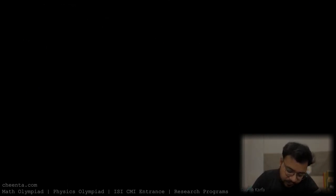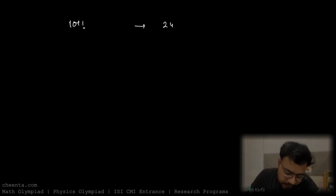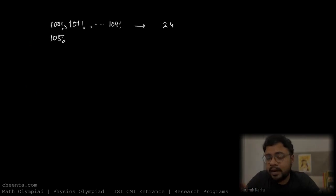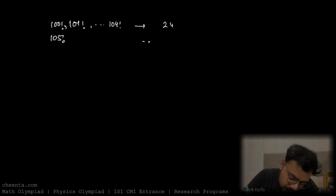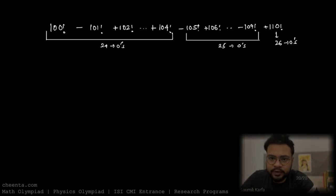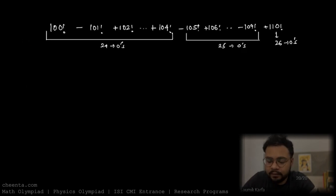Using the same idea, 101 factorial also ends with 24 zeros. In fact, any factorial from 100 through 104 factorial ends with 24 zeros. Starting from 105 factorial — which has one extra factor of 5 — it ends with 25 zeros, and this holds through 109 factorial. Then 110 factorial ends with 26 zeros. So looking at the given expression: the first 5 terms end with 24 zeros, the next 5 terms end with 25 zeros, and the last term ends with 26 zeros.